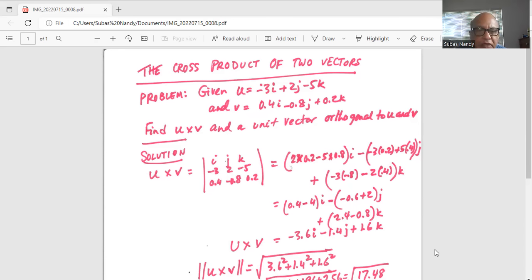And for the coefficient of k eliminate the first row and the third column. And we are left with minus 3, 2 and 0.4 and minus 0.8.